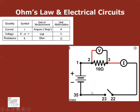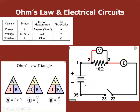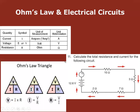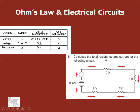Now calculate total resistance and current for a circuit with four resistors in series: 10, 3, 7, and 2 ohms. In a series circuit you simply add them together: 10 + 3 + 7 + 2 = 22 ohms total resistance.